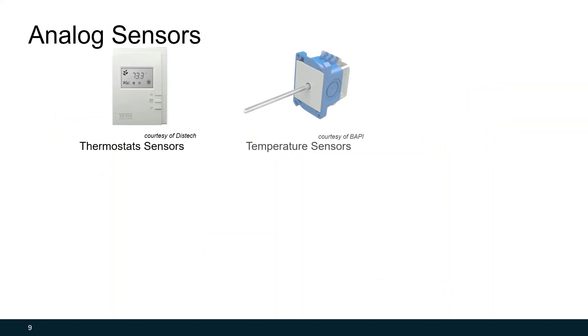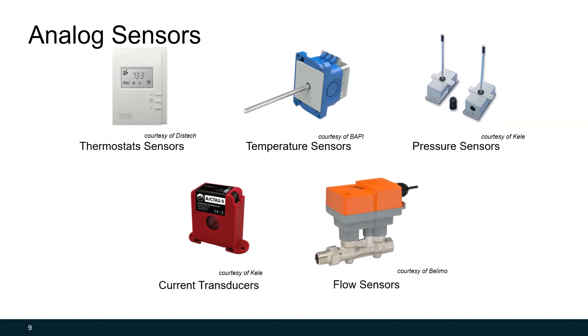There are many types of analog sensors. We've already discussed thermostats and temperature sensors, but you can also have pressure sensors, current transducers, and flow sensors. There's many types. A good example of the difference between an analog sensor and a binary sensor would be the current transducer. A current switch detects whether or not there's electricity flowing through a wire, but a current transducer is trying to tell how much current, how many amps are flowing through that wire.